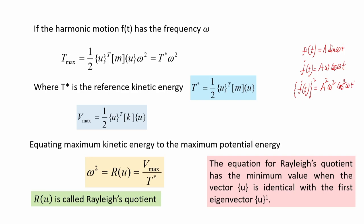The maximum kinetic energy is expressed as T_max = T* · ω², where T* is the reference kinetic energy: T* = (1/2) u^T M u. Here u is the eigenvector, M is the mass matrix, and ω is the natural frequency. Maximum potential energy is V_max = (1/2) u^T K u, where K is the stiffness matrix of size n×n for an n-degree-of-freedom system.